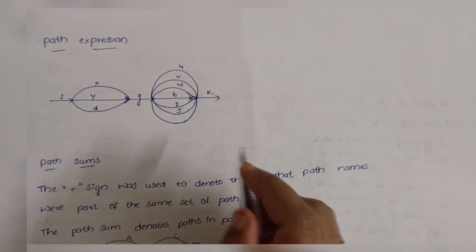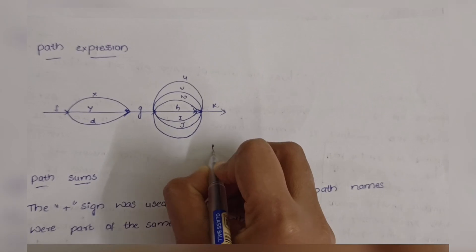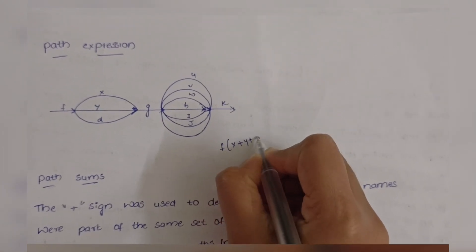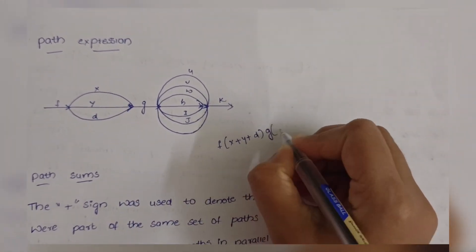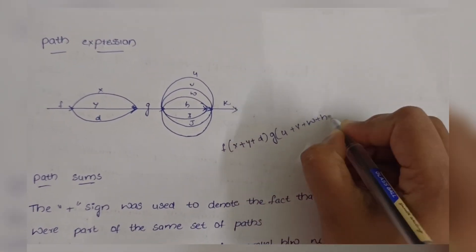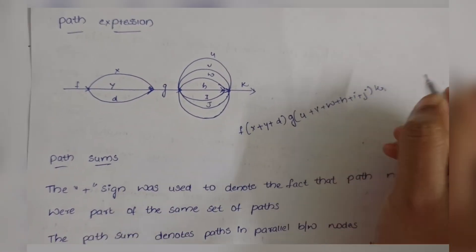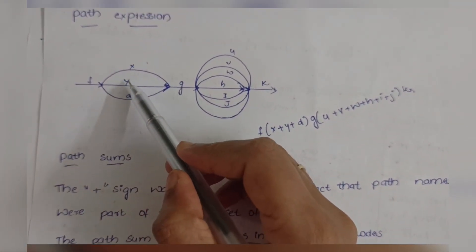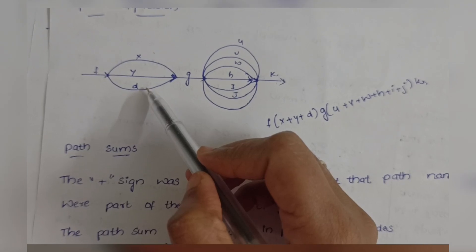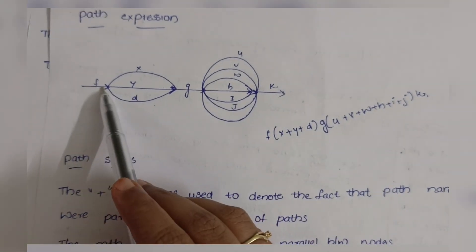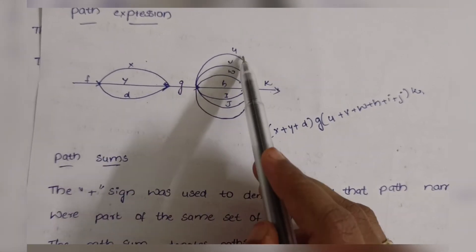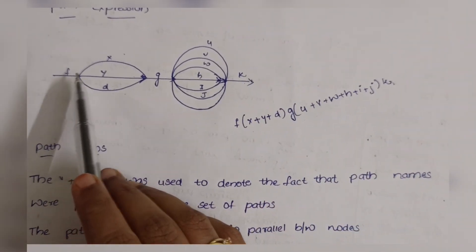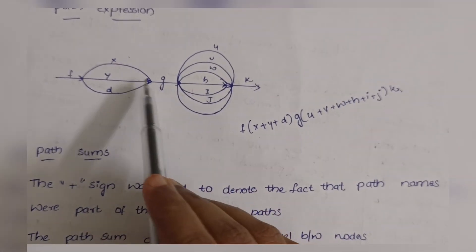From these, we can derive path expressions like F(X + Y + D) · G(U + V + W) + H + I + G · K, which equals A B C. Whatever passes through a line is represented by multiplication (product), and whatever is above and below these lines — the parallel lines — should be summed. So F(X + Y + Z) are parallel lines, and U V W H I J are parallel lines; we sum them and multiply.